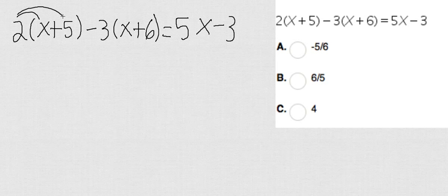Well, first let's go ahead and get rid of the parentheses. So we have 2x and then 2 times 5 which is 10. Then look at this, you have a negative 3. So you're going to do negative 3 times x and then negative 3 times 6 which is negative 18.